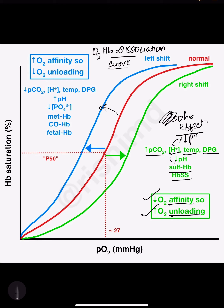What causes a left shift? Decreased PCO₂, decreased H⁺ concentration, decreased temperature, and decreased 2,3-DPG. A left shift also occurs in methemoglobin, carbon monoxide poisoning, and in fetal hemoglobin, because fetal hemoglobin has a higher affinity for oxygen than adult hemoglobin. A left shift denotes more affinity for oxygen and less oxygen unloading.